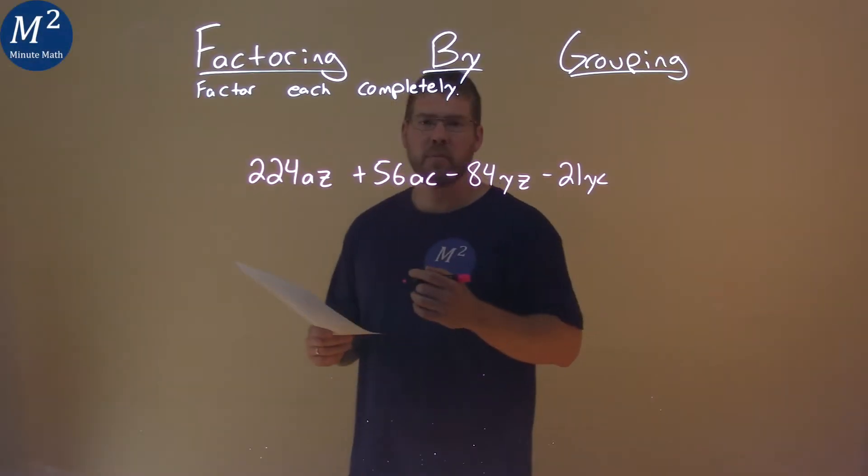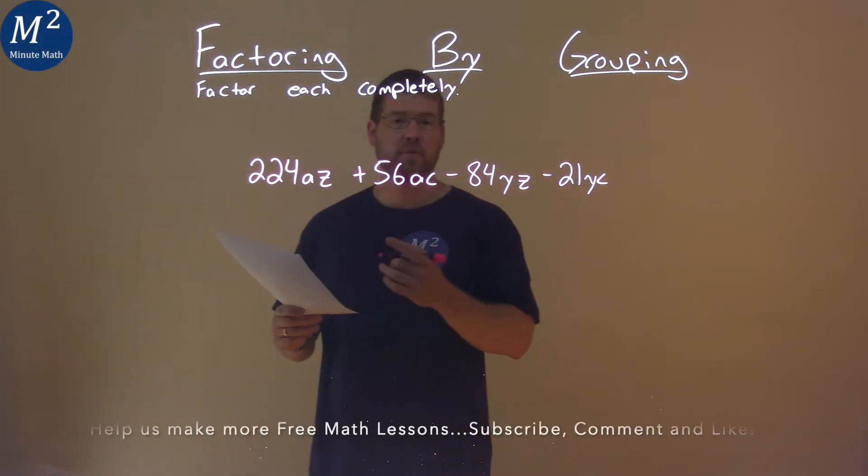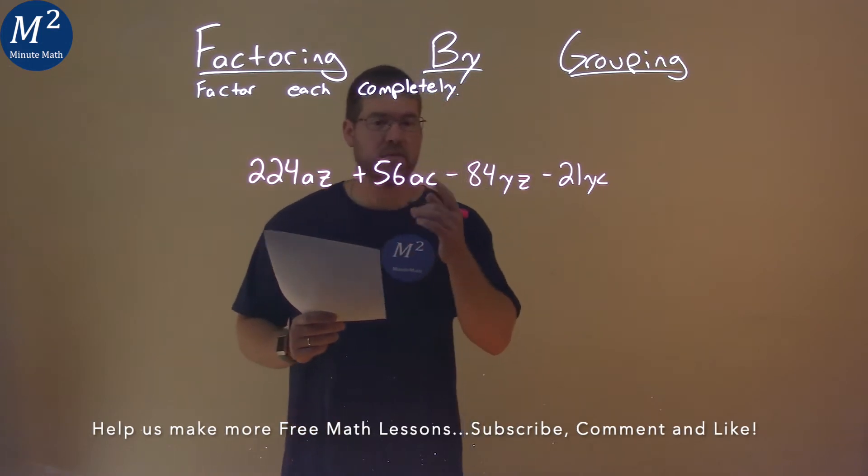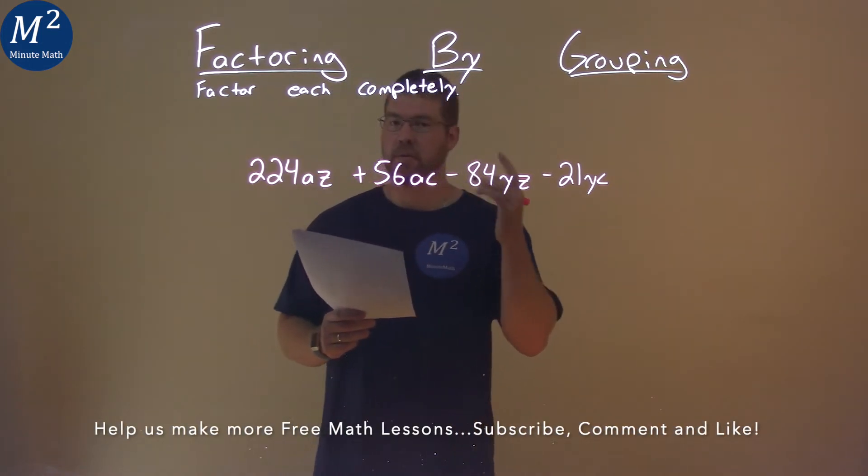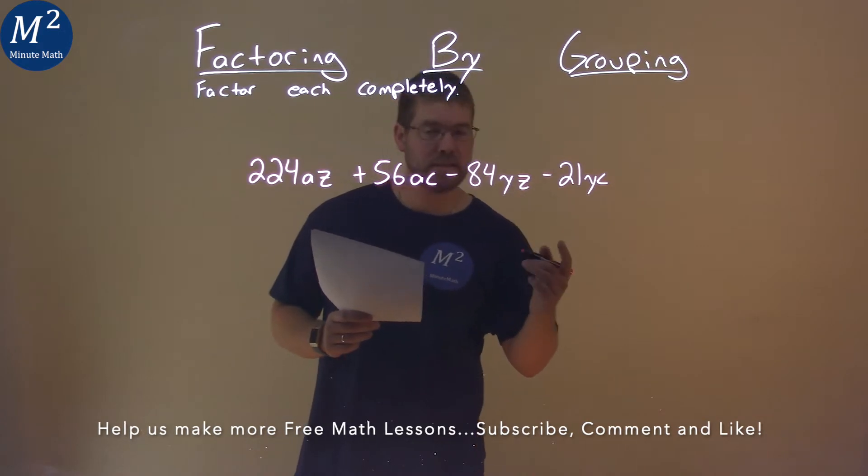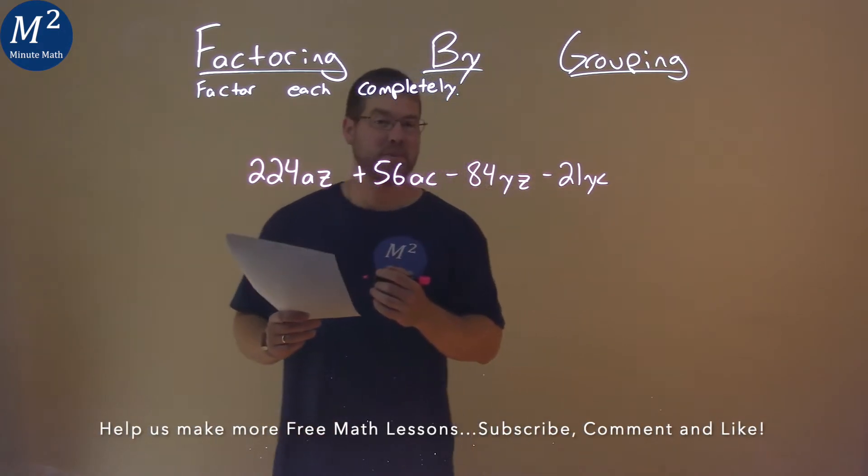We're given this problem right here: 224AZ plus 56AC minus 84YZ minus 21YC. And we need to factor this completely.